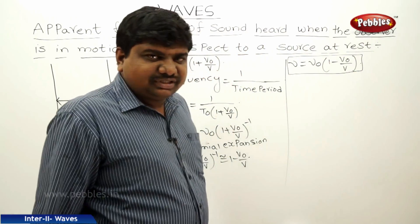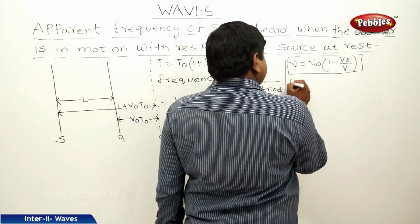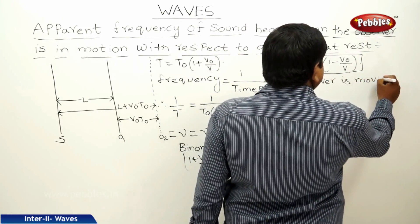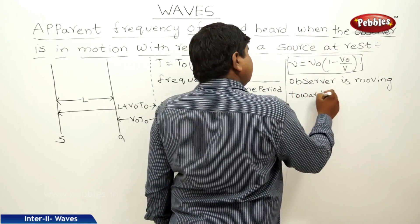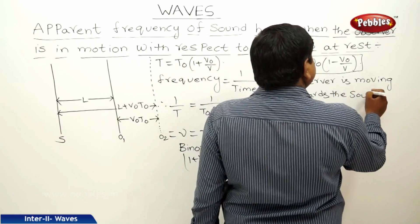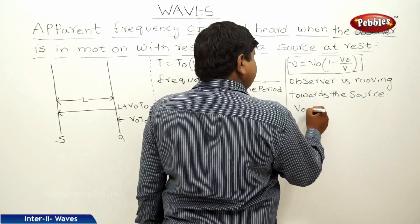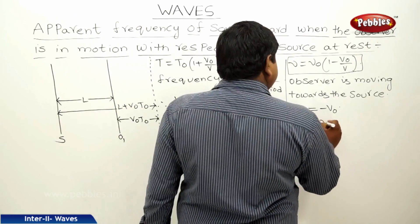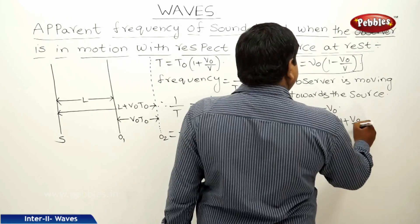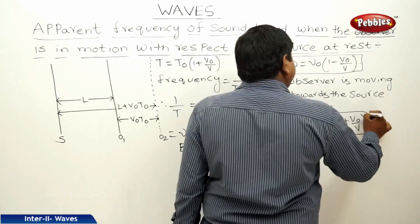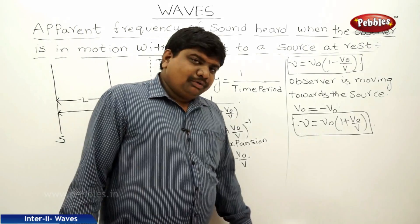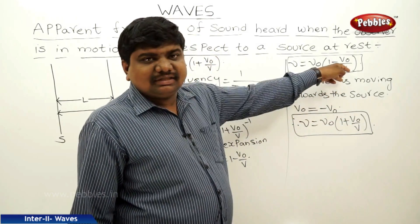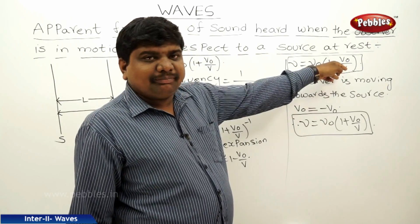There is a special case. When the observer is moving towards the source, V0 is replaced by −V0. Substituting this value, ν = ν0 · (1 + V0/V). In this case, there is a possibility of the highest apparent frequency when moving toward, and the lowest apparent frequency when moving away.